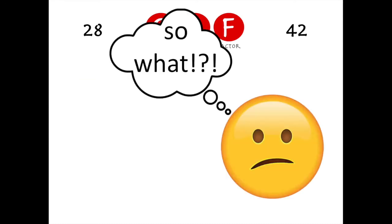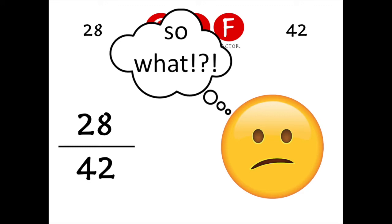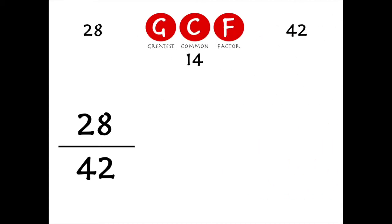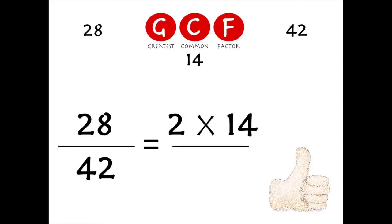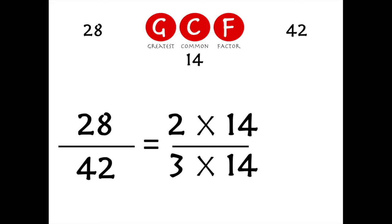So what? Well, let's say that those two numbers 28 and 42 are in a fraction — that's a big hairy fraction. We can use our greatest common factor of 14 to clean this up a bit. 14 goes into 28, 2 times — so 28 is really 2 times 14. And 14 goes into 42, 3 times — so 42 is just 3 times 14.